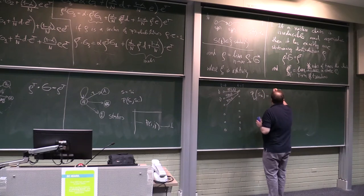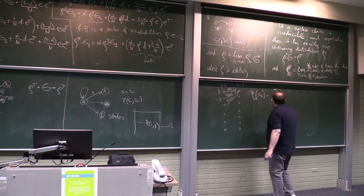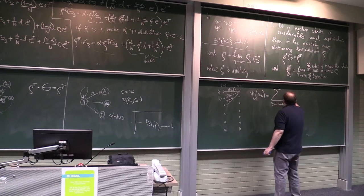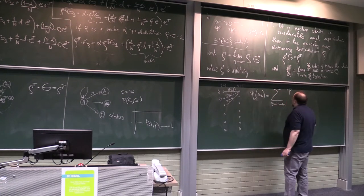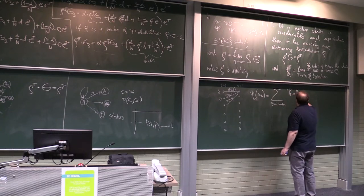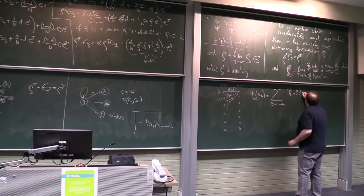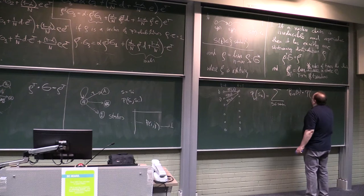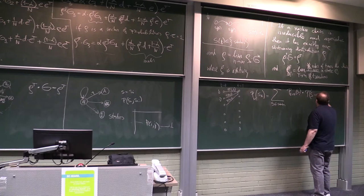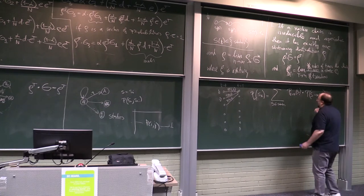Will be sum over all states of probability when t is equal to 0 to be in state s, times probability to go from s into s_k, right?